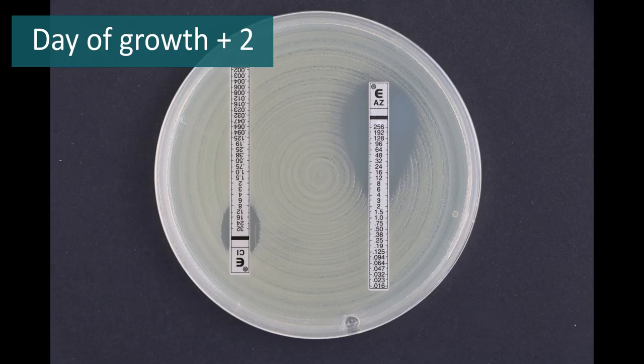The higher the concentration of the antibiotic, the larger the zone of inhibition. The minimal inhibitory concentration is read at the intersection of the ellipse and the strip.